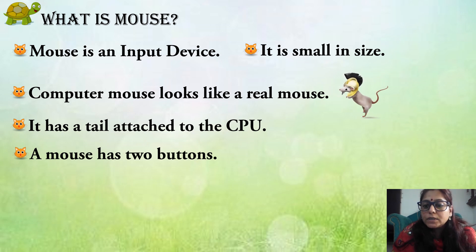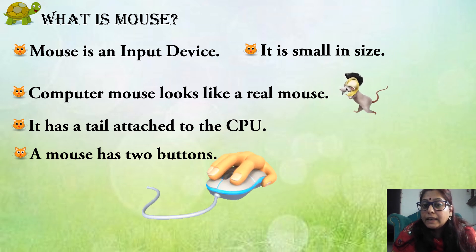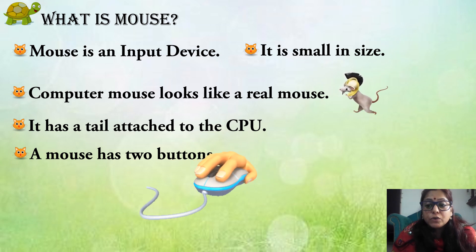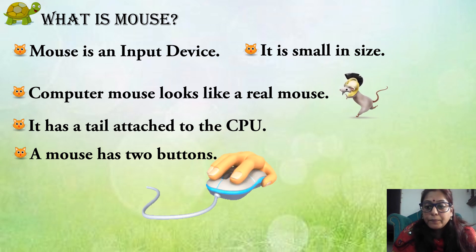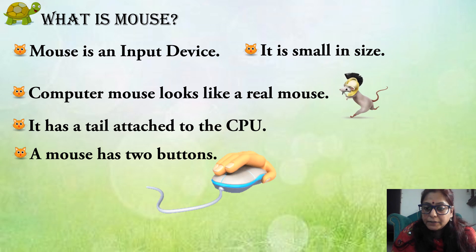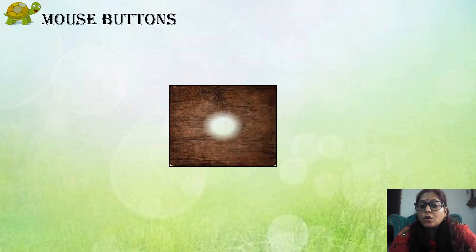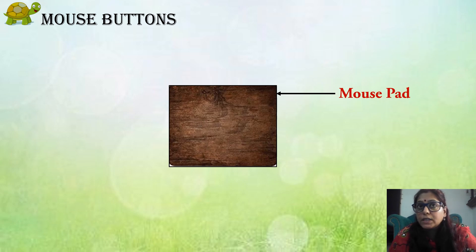Mouse has two buttons on it, which you can use for clicking. Next is the mouse pad. Mouse is kept on this pad, so this is known as a mouse pad, on which we keep our mouse so that it works properly.